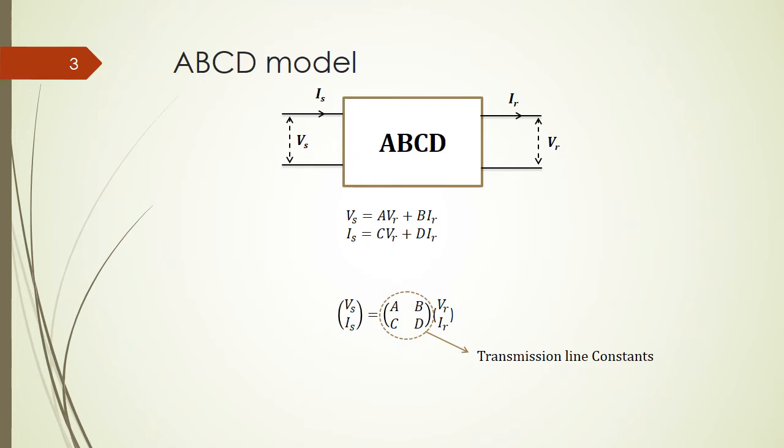They are the parameters that link the sending end voltage and currents with the receiving end voltage and currents. We see that Vs equals A times Vr plus B times Ir, and Is equals C times Vr plus D times Ir. If we rewrite this into a matrix form, the input at the sending end Vs and Is as vector will be equal to the matrix ABCD multiplying with the output vector Vr and Ir.